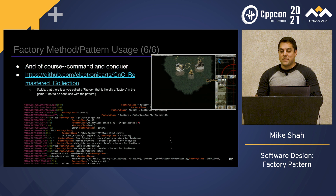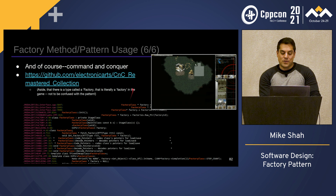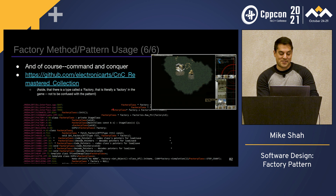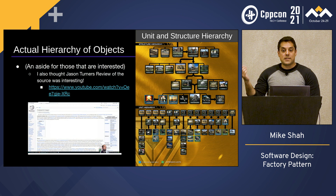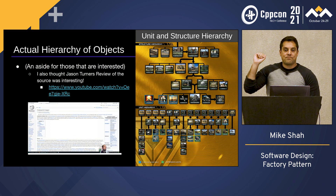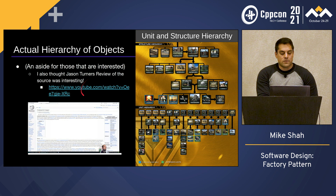It better be in Command & Conquer, which I've been showing throughout — and it is in the Command & Conquer Remastered edition. Be careful though, because there is a literal factory building in the game, but they also use the factory pattern in it. You can see the factory class. It sort of makes sense — they're trying to do something with inheritance and these are the actual game objects, buildings and such. Jason Turner did a source review of the Command & Conquer code, which I thought was really interesting and may help give some insights.